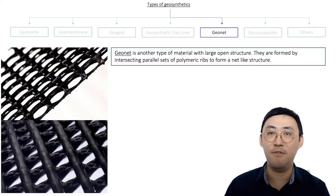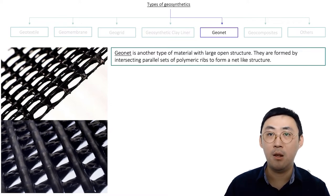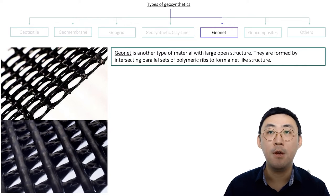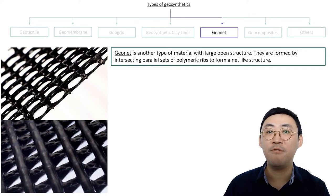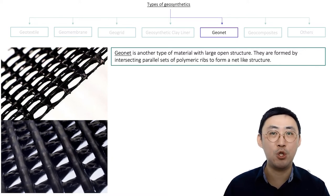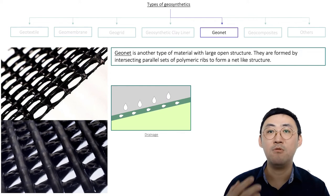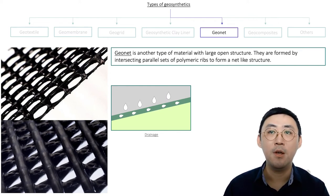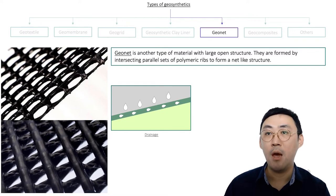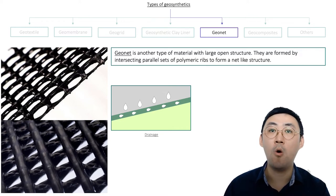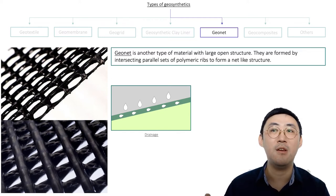The fifth type of material is geonet. Geonet is a material with large open structures, formed by intersecting parallel sets of polymeric ribs forming a net-like structure. This material is used as a drainage function to facilitate in-plane liquid flow. They are commonly seen in landfills, behind walls or slopes, behind a geomembrane in dam applications, or in mining applications. Geonet serves one important function: drainage.